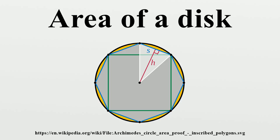Archimedes's proof: Following Archimedes, compare a circle to a right triangle whose base has the length of the circle's circumference and whose height equals the circle's radius. If the area of the circle is not equal to that of the triangle, then it must be either greater or less. We eliminate each of these by contradiction, leaving equality as the only possibility.